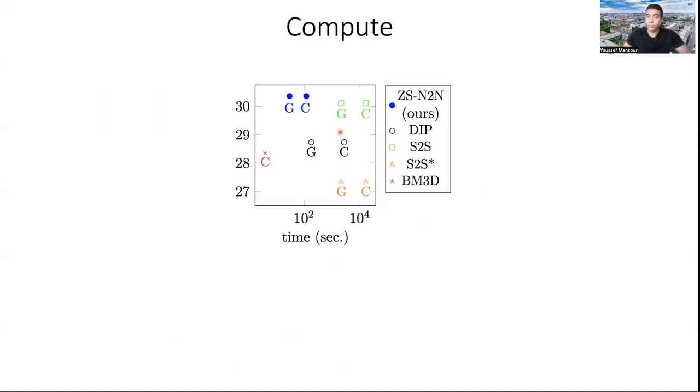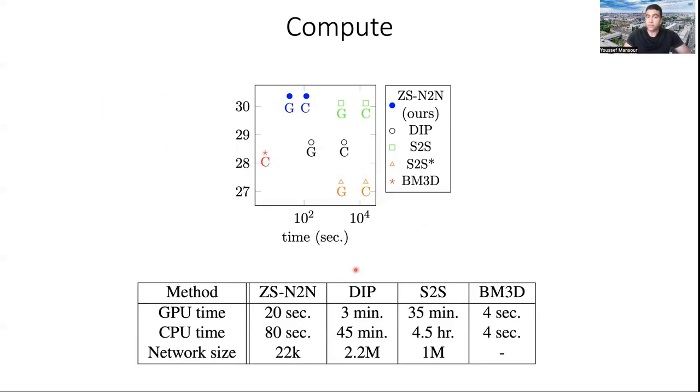Now, if we come to compute, these are the PSNR scores on Poisson denoising. And as we can see, our method is faster than all other methods. Only BM3D is faster, but you can see the difference in performance. Here's just summarizing those numbers again in this table. Also check the network size. Ours is like 22,000. However, DIP and Self-to-Self require millions of parameters.